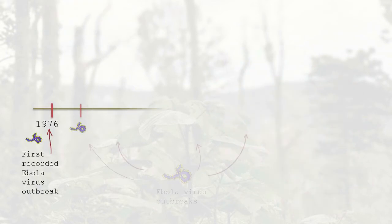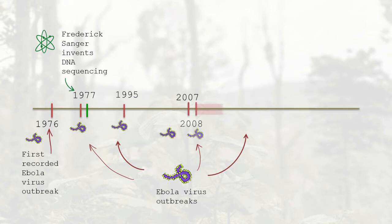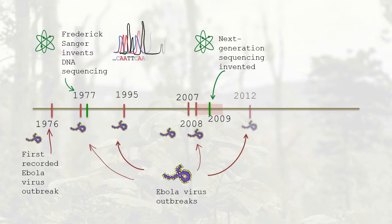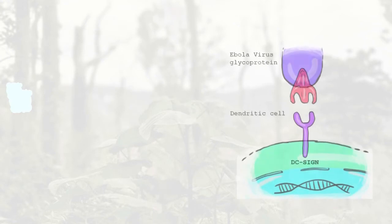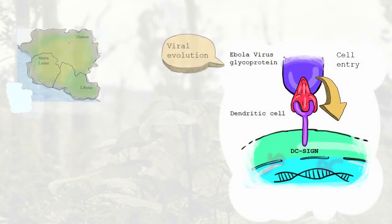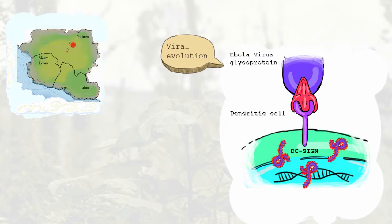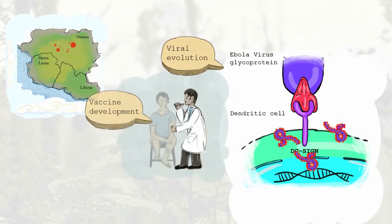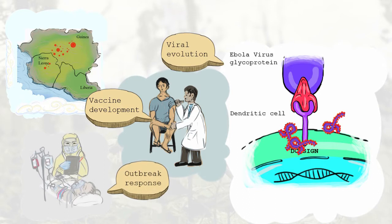During the 2014 Ebola outbreak, the virus was rapidly spreading and claiming lives, yet we knew nothing about how the nucleotide substitutions in Ebola's genome made this virus so contagious and deadly. Nucleotide substitutions may alter protein sequences or other biological targets, so monitoring them is essential for understanding viral evolution, vaccine development, and future outbreak control.